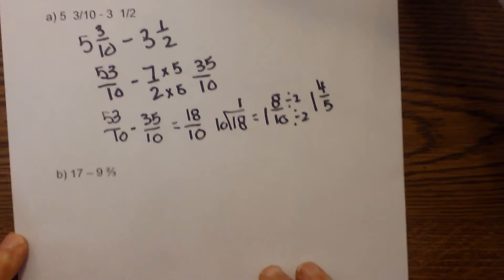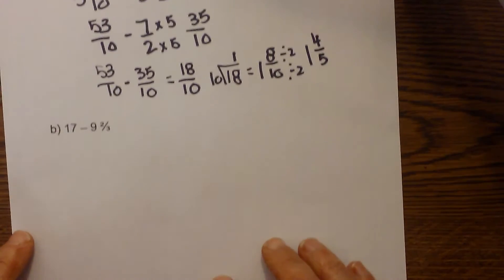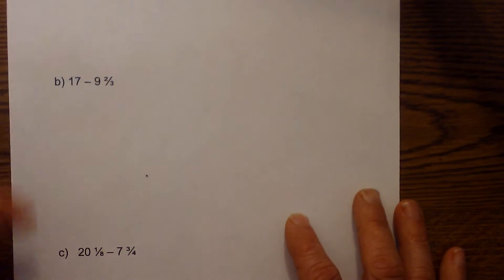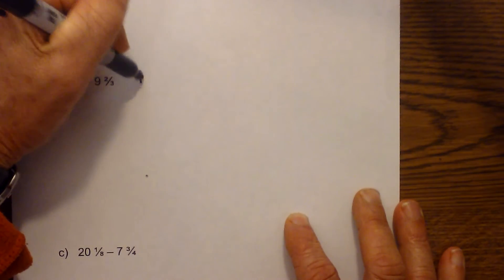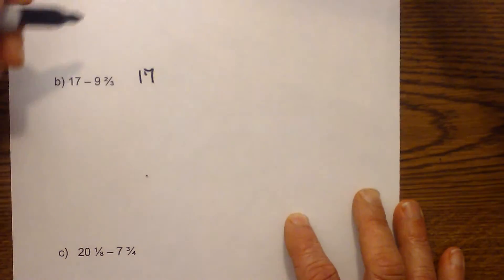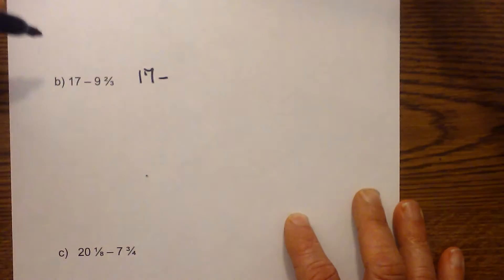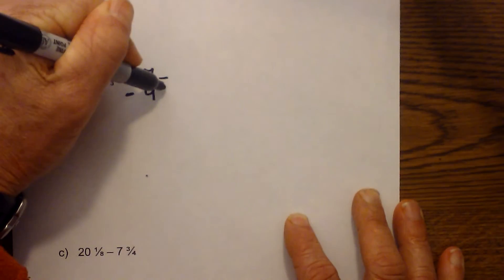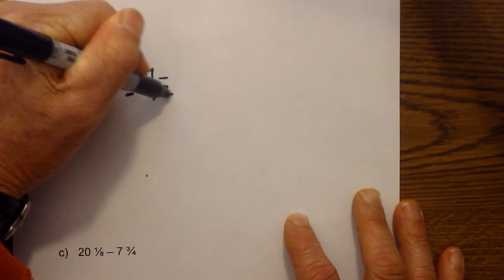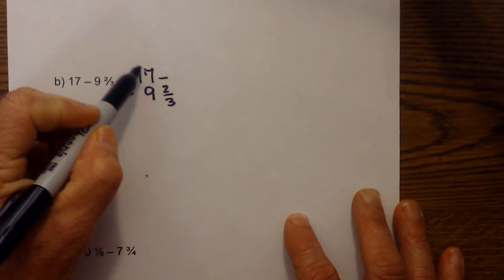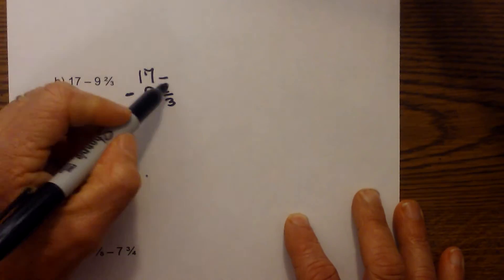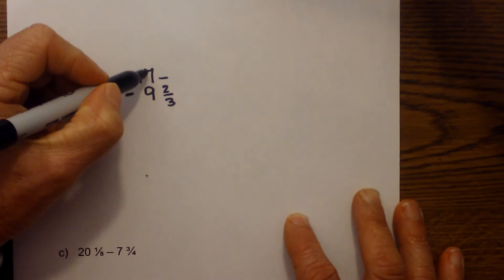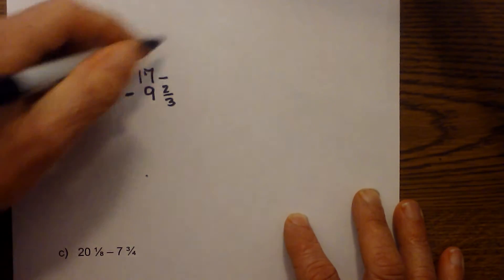You can see I got the same answer both ways. Now let's work the next problem: seventeen minus nine and two-thirds. With this one we don't have a fraction to subtract from, so what we do is borrow one from the seventeen.